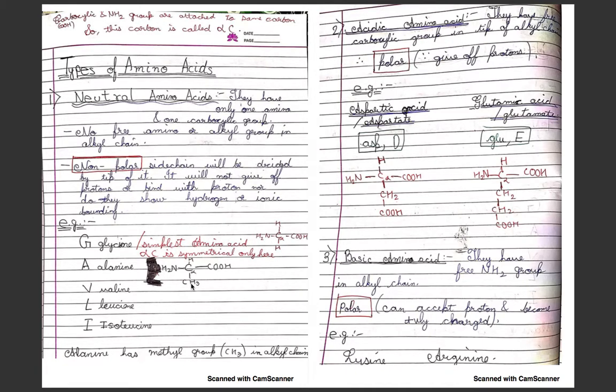Acidic amino acids have a free carboxylic group in the tip of their alkyl chain, and therefore they are polar since they give up protons. Examples are aspartic acid and glutamic acid. Aspartic acid is also known as aspartate, and glutamic acid is also known as glutamate. In aspartic acid, the alkyl chain has CH2-COOH, and in glutamic acid, the alkyl chain is CH2-CH2-COOH.